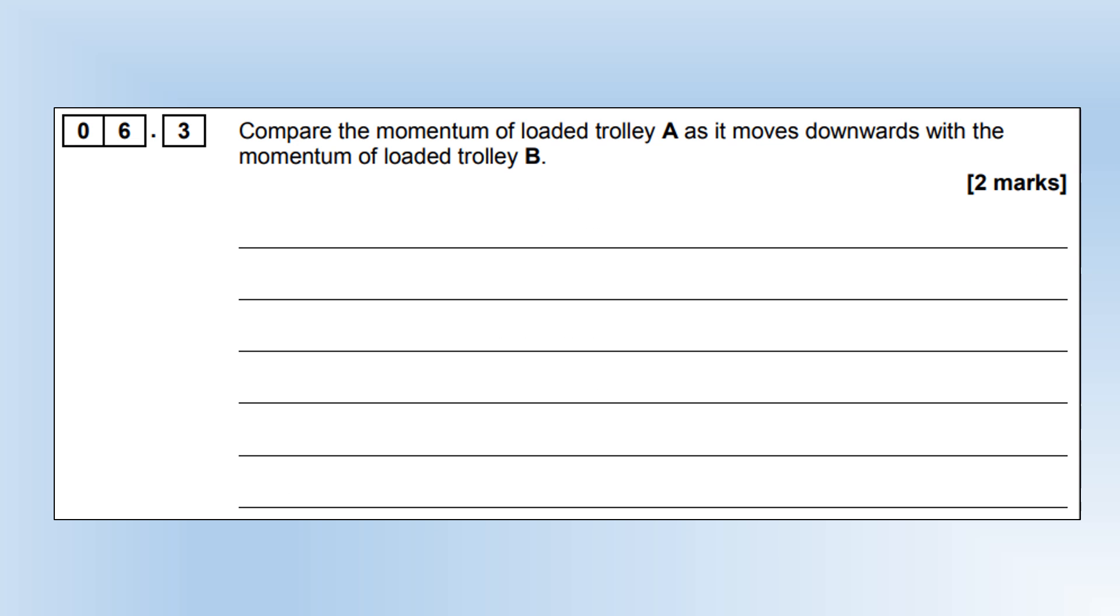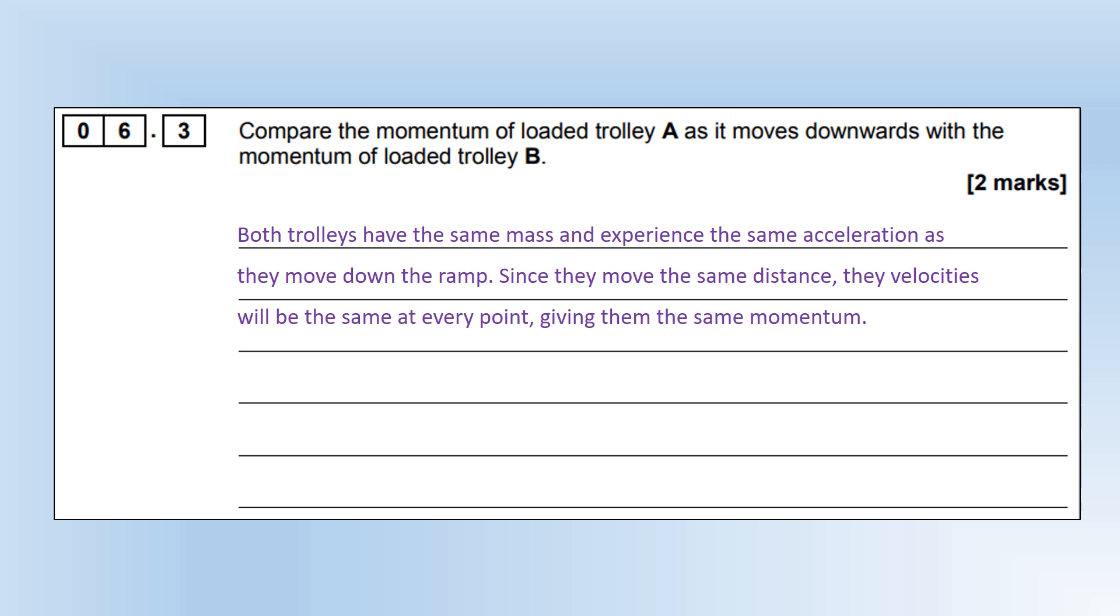Compare the momentum of loaded trolley A as it moves downwards with the momentum of loaded trolley B. They have the same mass and they experience the same acceleration, so as they move the same distance their velocities will be the same at every point, giving them exactly the same momentum.